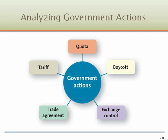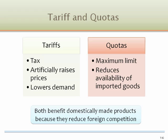Trade negotiations often revolve around reducing or eliminating tariffs, quotas, or similar impediments to trade. Both tariffs and quotas benefit domestically made products because they reduce foreign competition.